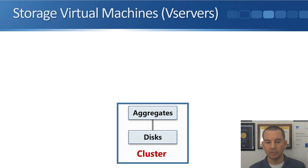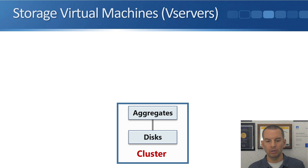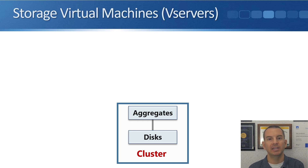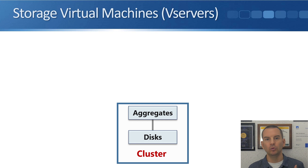At the cluster level, disks and aggregates are managed at the global level. If we had dedicated aggregates for department A and department B, and department A's aggregates got very full while department B still had plenty of space, we'd have to buy more disks for department A even though there's plenty of spare space at department B — not an efficient use of physical capacity. So aggregates are a pooled global resource, and the storage on them can be given to any of the different SVMs.